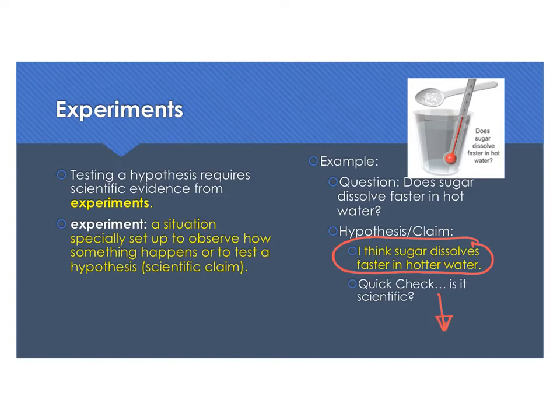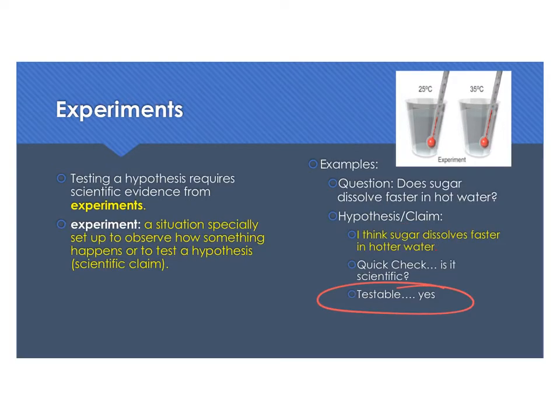Quick check: is this a scientific claim? If you remember from last week, a scientific claim is one that can be disproven or proven false. In other words, can we come up with evidence that would definitively tell us that sugar does not dissolve faster in hotter water? Yes, we could. So this does meet the requirements of a scientific claim. It is testable, absolutely.